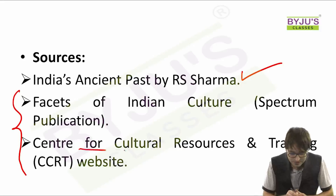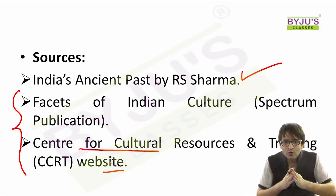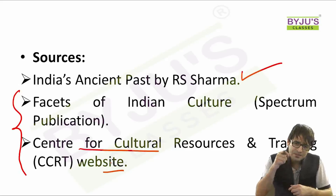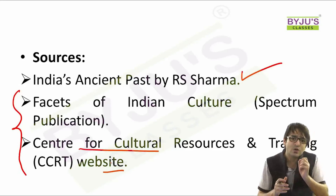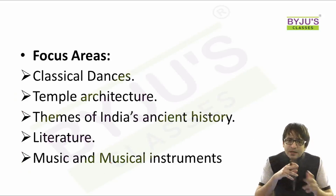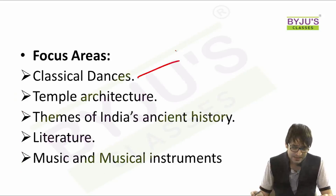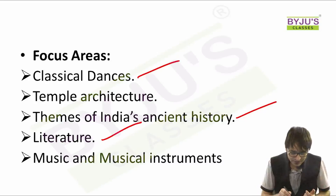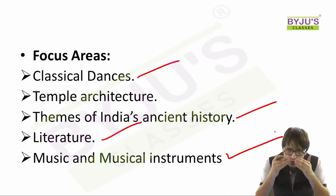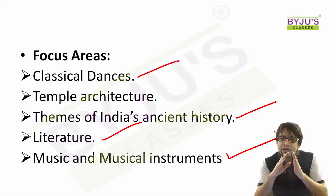Now that you know what the syllabus is and what the sources are, let me tell you where your focus has to be concentrated. What are the key focus areas? You need to focus on classical dances, temple architecture, themes of India's ancient history, literature, and music and musical instruments. If you focus on all these areas, then you have covered close to 90% of your Indian art and culture syllabus.